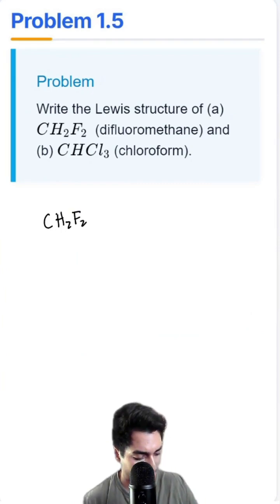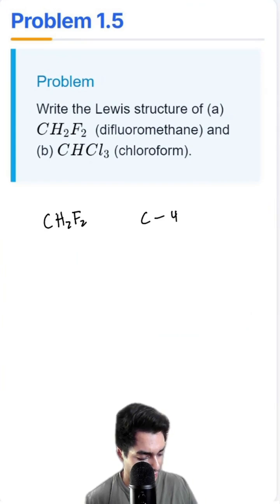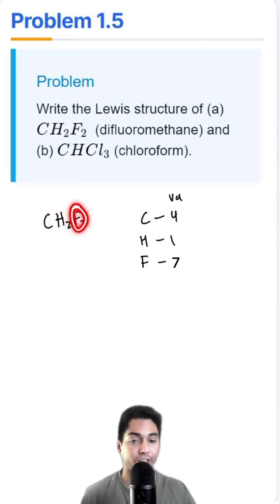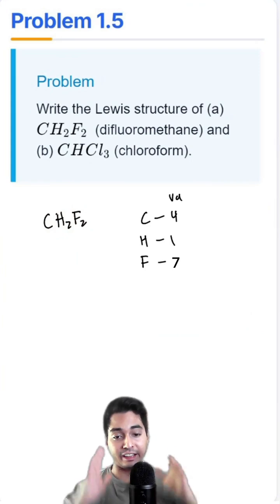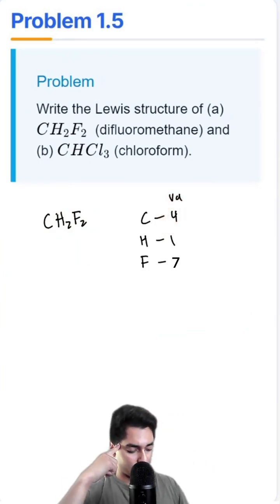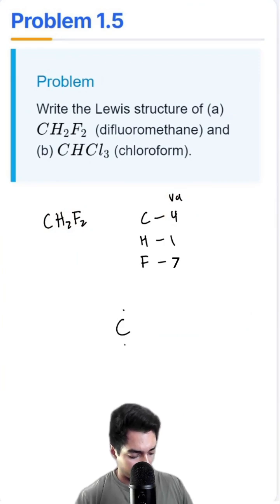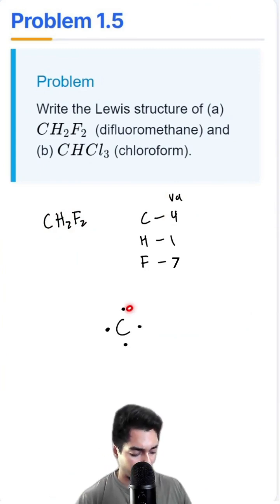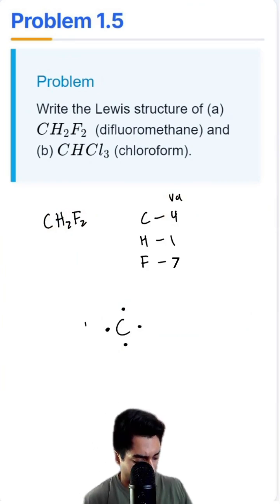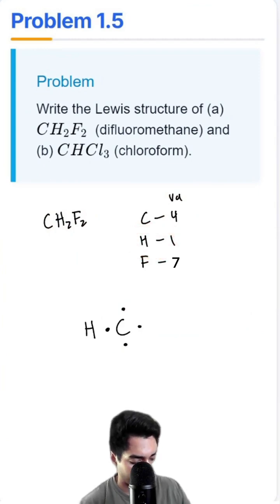Starting with CH2F2: carbon has 4 valence electrons, hydrogen has 1, and fluorine has 7. We have 1 carbon, 2 hydrogens, and 2 fluorines. Carbon is going to be right in the center, and I'm going to place 1, 2, 3, 4 valence electrons on each side. We have 2 and 2 atoms, so I'm going to arbitrarily select H for this side — H has 1 valence electron — and bond it right over here.